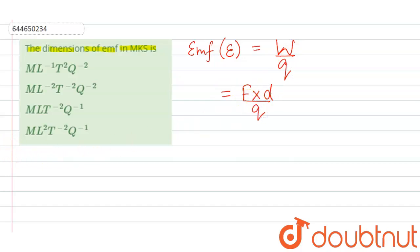Now putting the dimension here, the dimension of force is MLT minus 2 and the dimension of distance is L and Q will remain Q.